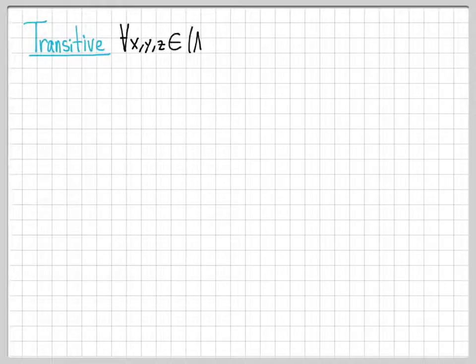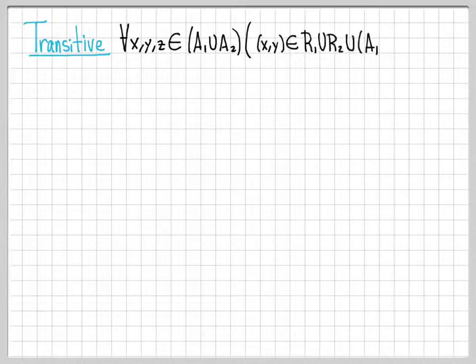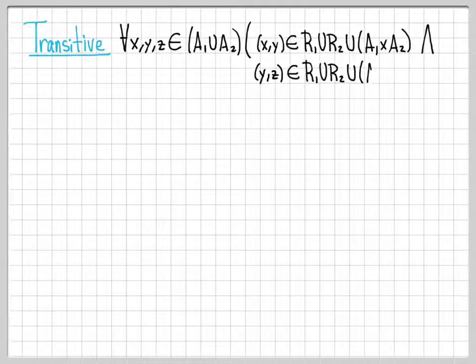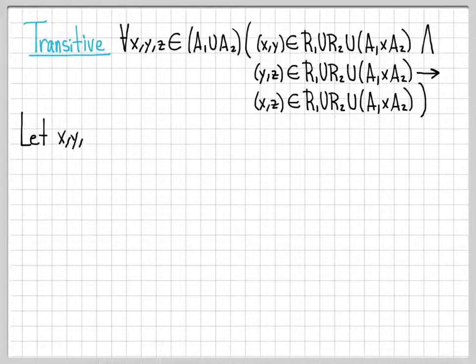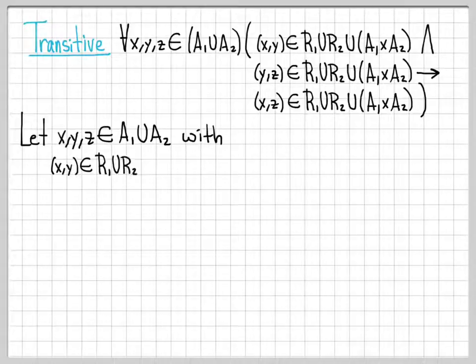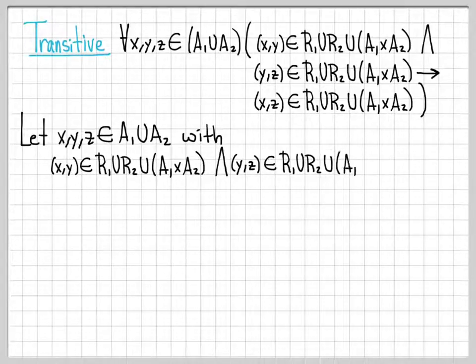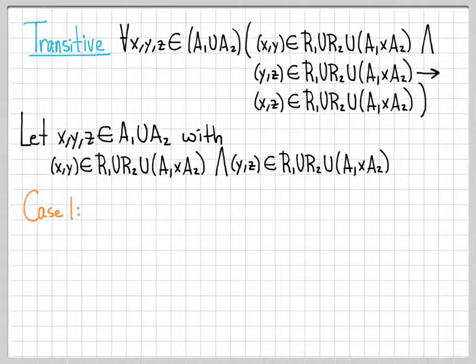Finally, the transitive property. Transitivity says that for all X, Y, Z in A1∪A2, if (X,Y) is in the set and (Y,Z) is in the set, then (X,Z) must also be in the set. We let X, Y, Z be arbitrary elements of A1∪A2 and assume (X,Y) and (Y,Z) are both in R1∪R2∪(A1×A2). There will be nine cases to enumerate.